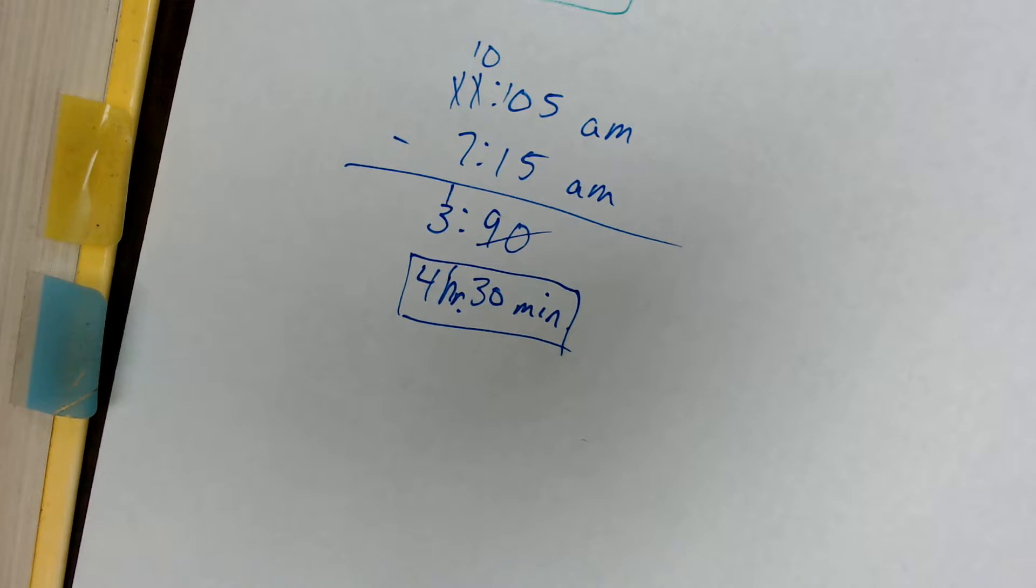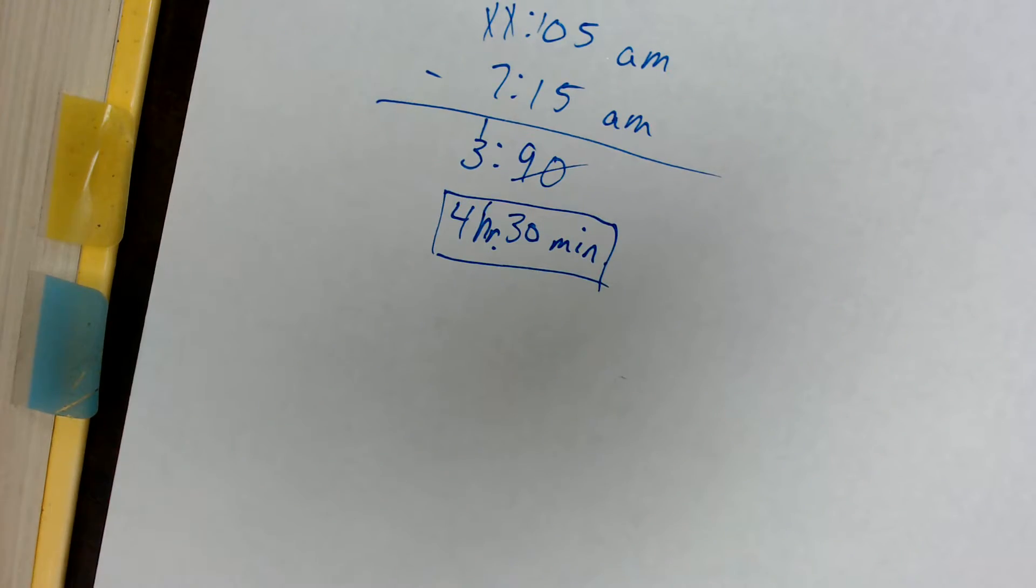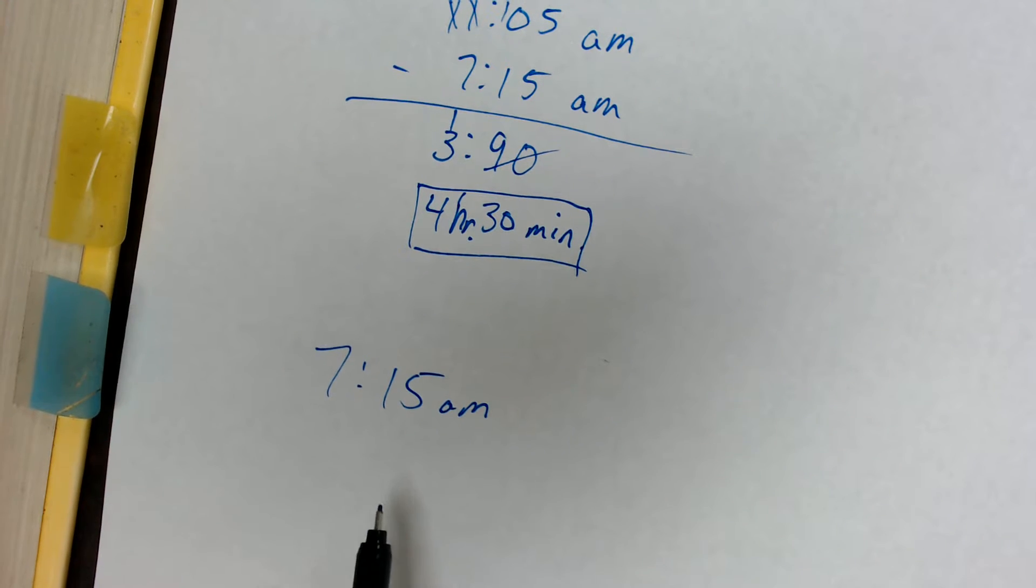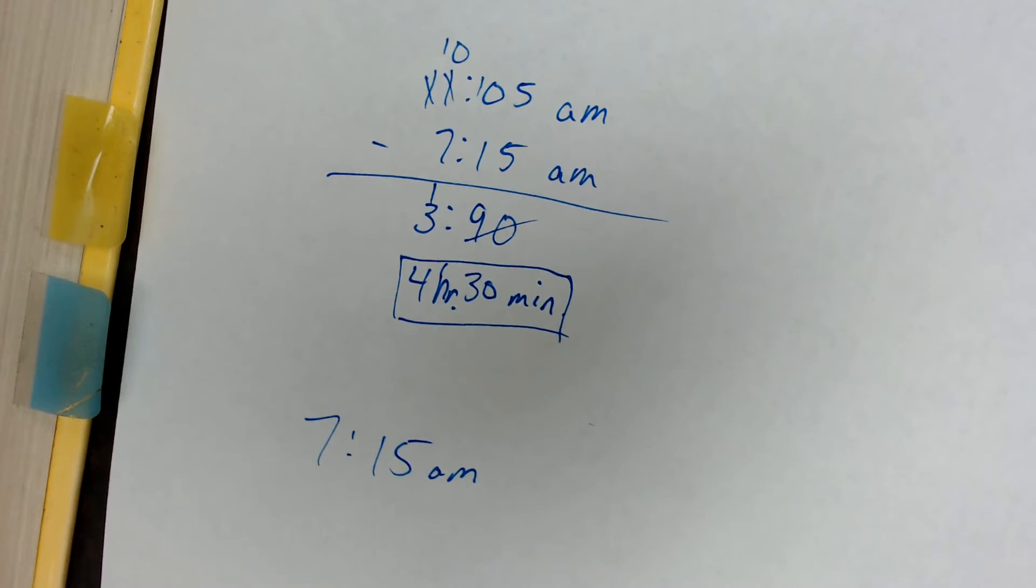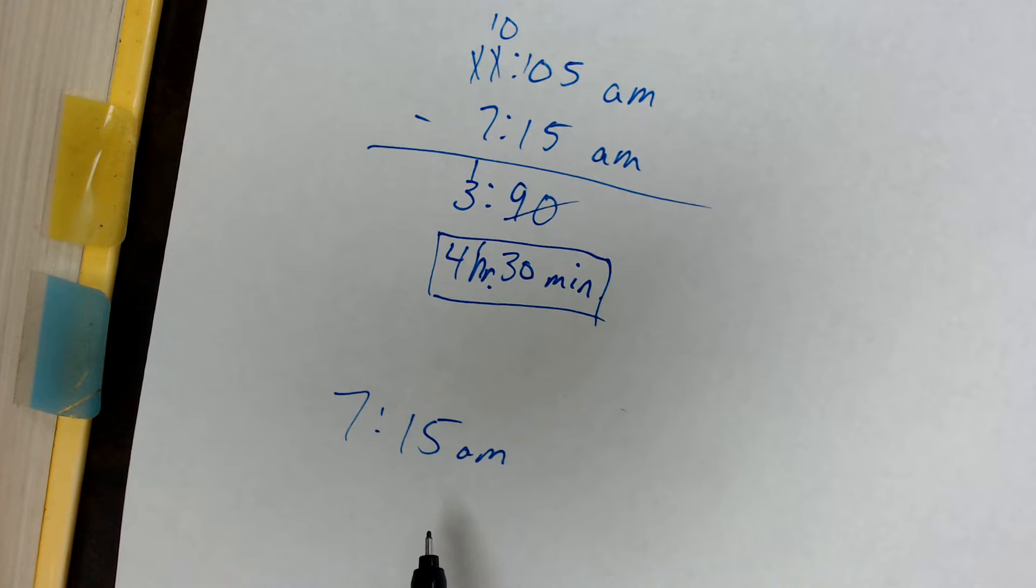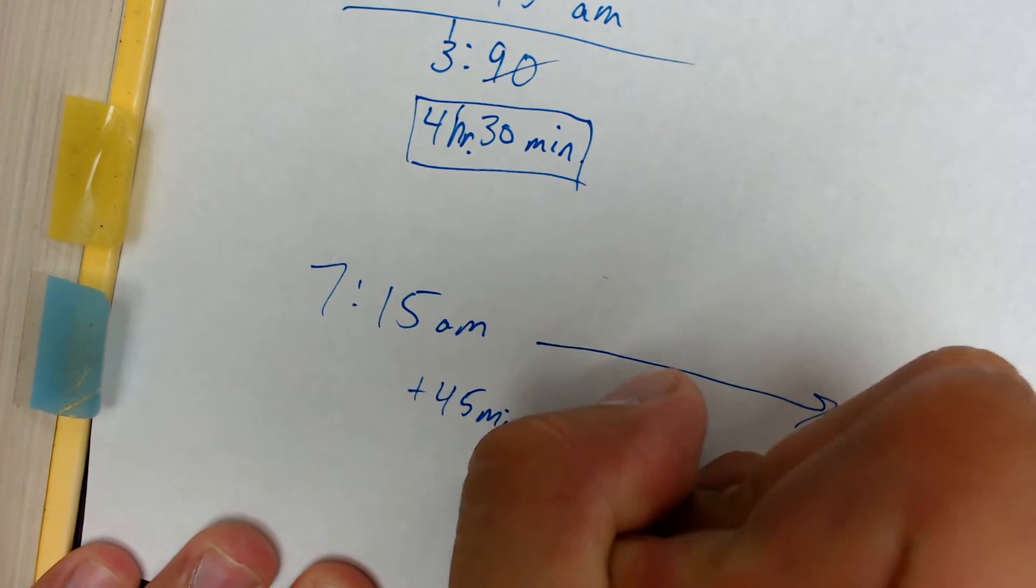Now, what I do logically in my brain whenever I have to solve these problems is I actually count upwards. This method takes more time on paper, but it actually takes less time in your head. So this is just an alternative method to solve the problem. I'd start out with the time 7:15 a.m. And then I would ask how much time do I need to get to the next hour so I can just add hours. I don't want to have to add minutes because minutes are difficult.